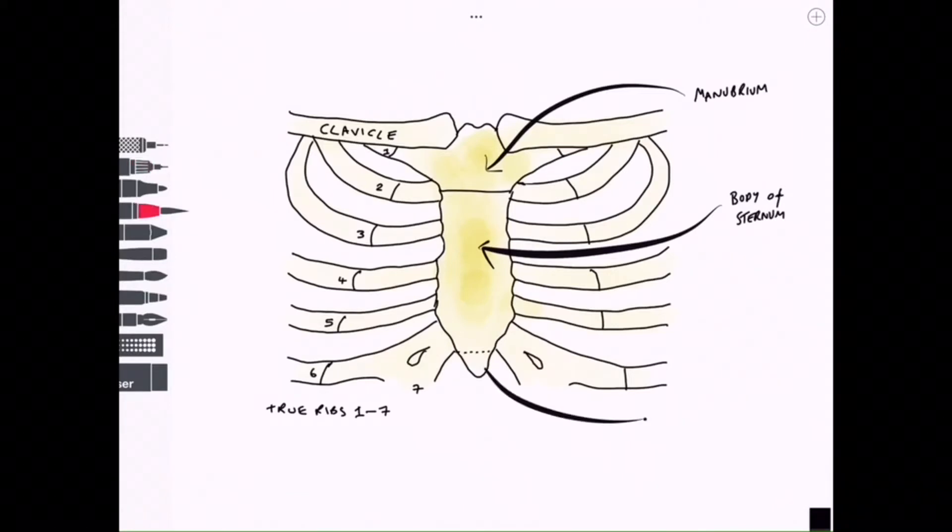Next is the xiphoid process which is variable in shape and size. It starts off as a cartilaginous structure but becomes ossified in adulthood.